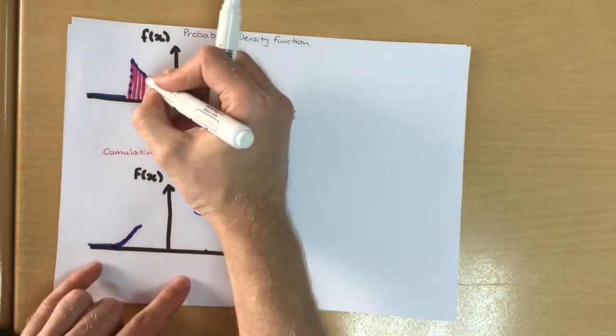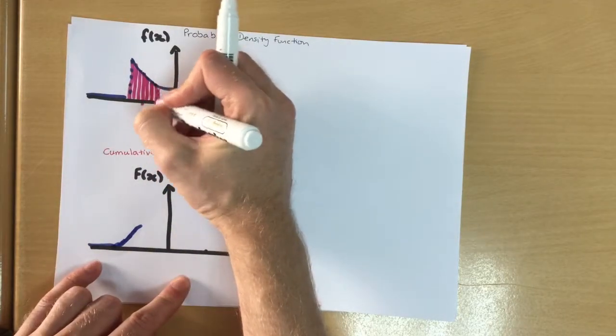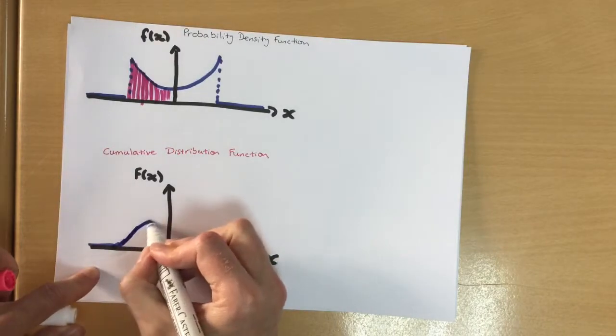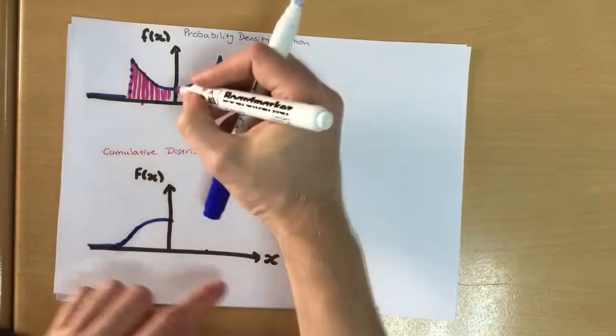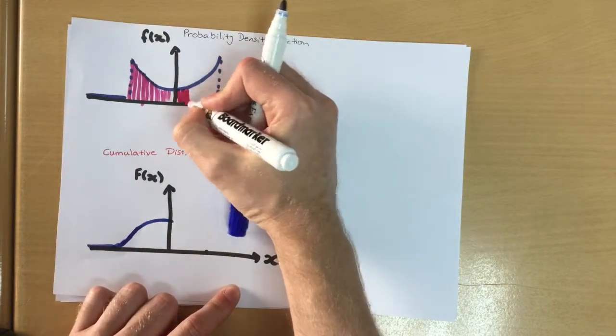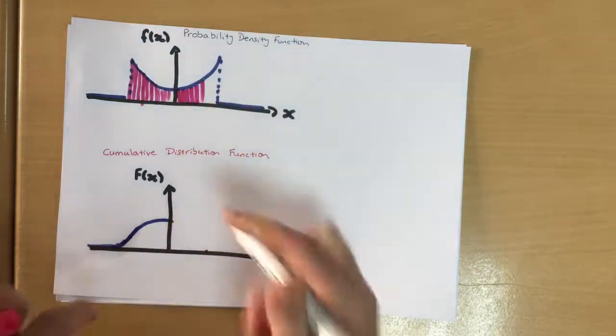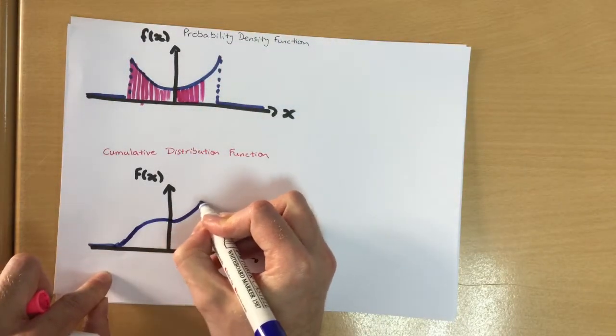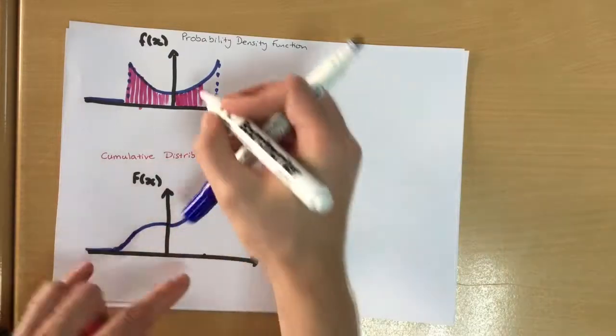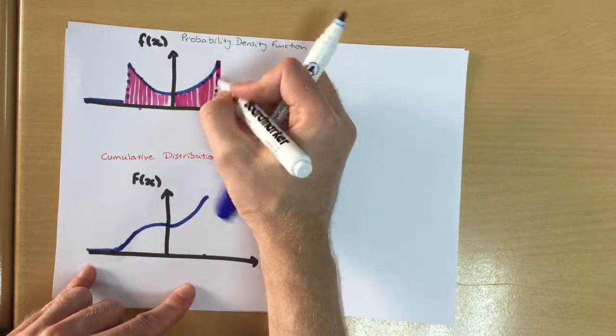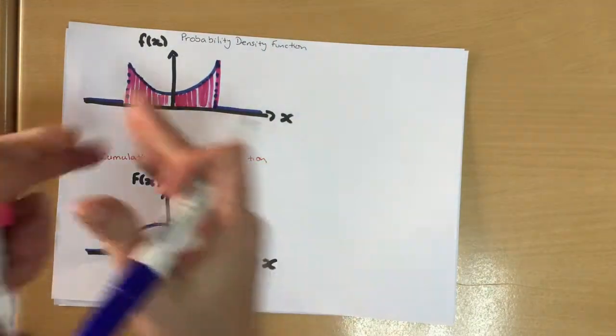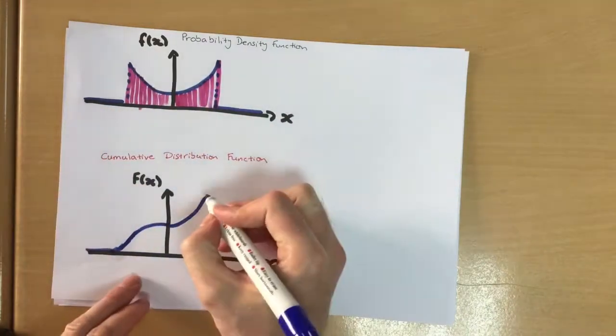Then it starts to slow. As these get smaller, you're going to start to slow down in the rate of increase. And then past this side as you add on these bits, adding on more and more each time. So that's going to get larger again.